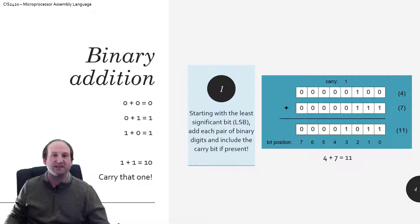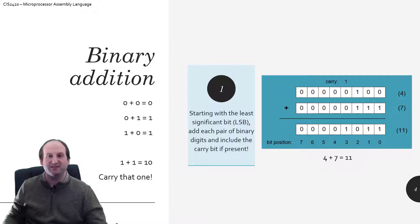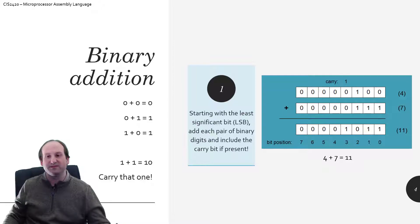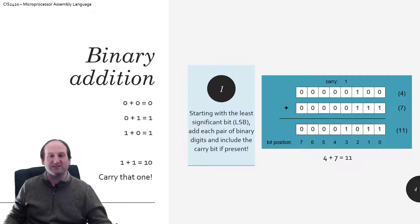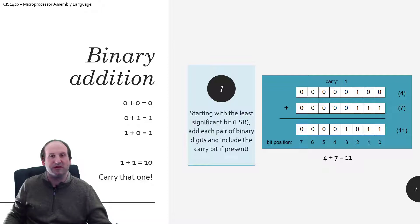Binary addition works pretty much exactly the same as decimal addition, but it's much easier — there's no chart to memorize. There are only four possible cases on a bit-by-bit basis: 0 plus 0 is 0; 1 plus 0 is 1; 0 plus 1 is 1; and 1 plus 1 is 2, which in binary is 10 — so you write 0 and carry the 1. For example, binary 4 plus binary 7 must equal 11, and if it doesn't, the math is wrong.